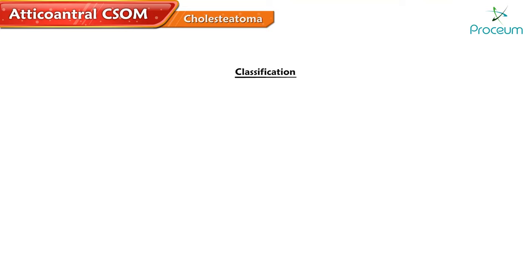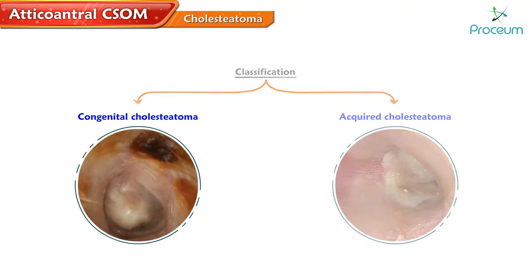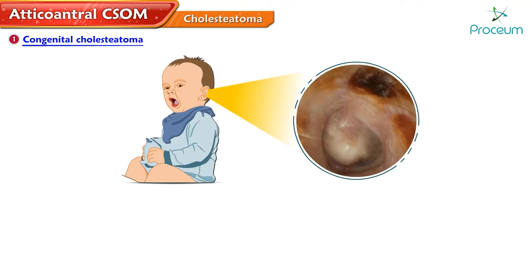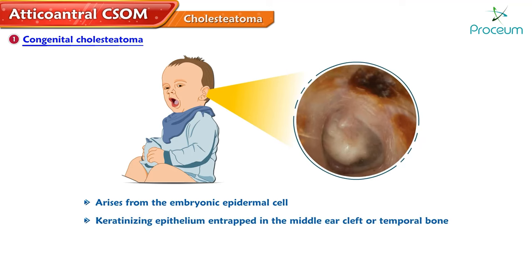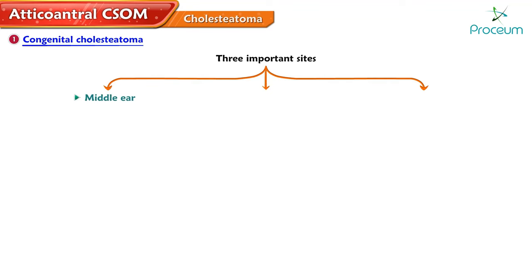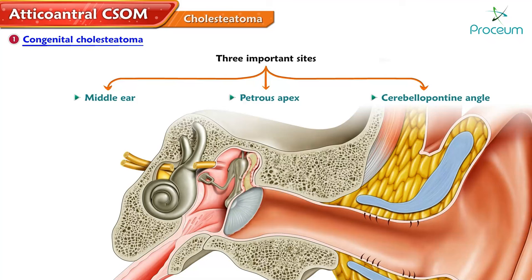Classification. Cholesteatoma of the temporal bone is classified into two categories: congenital and acquired. Congenital cholesteatoma arises from embryonic epidermal cell rests — keratinizing epithelium entrapped in the middle ear cleft or temporal bone. The three important sites include the middle ear, the petrous apex, and the cerebellopontine angle. A middle ear congenital cholesteatoma presents with conductive hearing loss and a white mass seen behind an intact tympanic membrane. It may rupture through the tympanic membrane and present with a discharging ear, becoming indistinguishable from chronic suppurative otitis media.